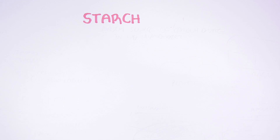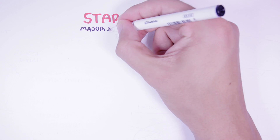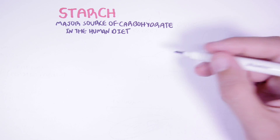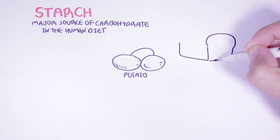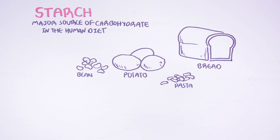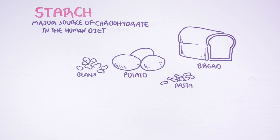In this video we will explore the carbohydrate starch. Starch is the major source of carbohydrate in the human diet. Examples of starchy food include potatoes, bread, pasta and beans. Starch is stored in plants and seeds and is used as an energy source. We will look at where and how starch is stored, then learn about its structure and how it is digested in the human body, and finally focus on resistant starch.